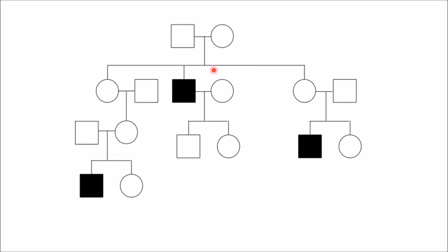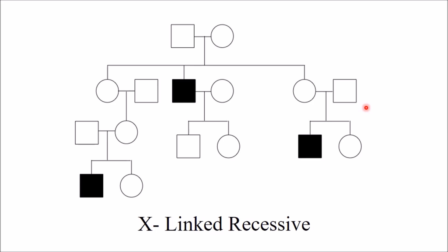In this example, skipping of generation is seen, so it is recessive. There is no male-to-male transmission, so it could be X-linked recessive or autosomal recessive. However, males are affected while females are not, which favors X-linked recessive over autosomal recessive. In exams, if males are more affected than females, it suggests X-linked recessive; if both genders are equally affected, it is autosomal recessive.